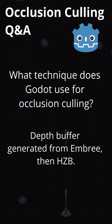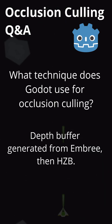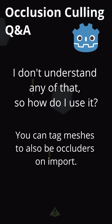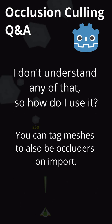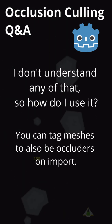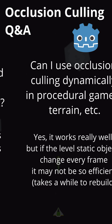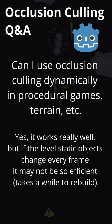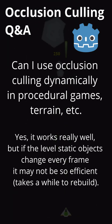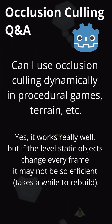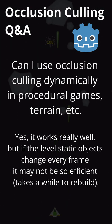A depth buffer generated from Embree, then HZB. I don't understand any of that, so how do I use it? You can tag meshes to also be occluders on import. Can I use occlusion culling dynamically in procedural games, terrain, etc.? Yes, it works really well.